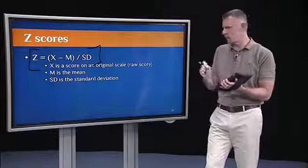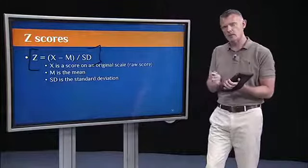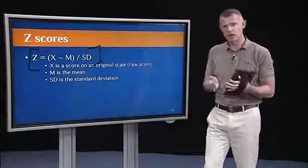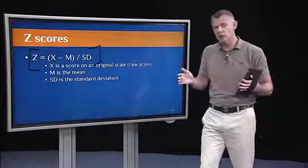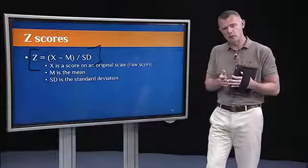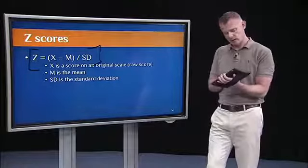So we'll just take the raw score, subtract the mean, divide by the standard deviation. That gives us a Z score. And if we do that for every score in a distribution, then we can put our distribution on this common metric, the Z scale.